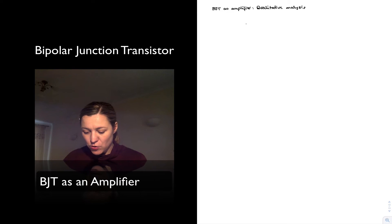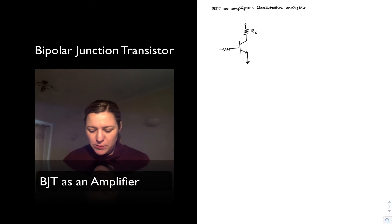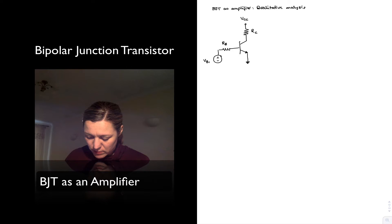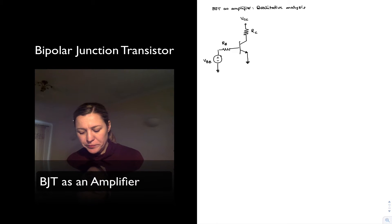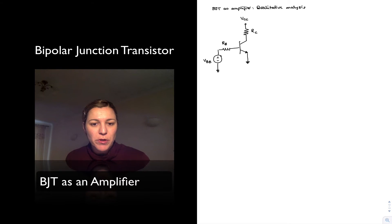I'm going to first draw a biasing network, so the first step in building any amplifier will be to bias our transistor. I'm not going to get into the details of a very complex biasing network — I'll put the simplest one so that we don't get confused with the details. So far I've only applied DC sources to bias the transistor.